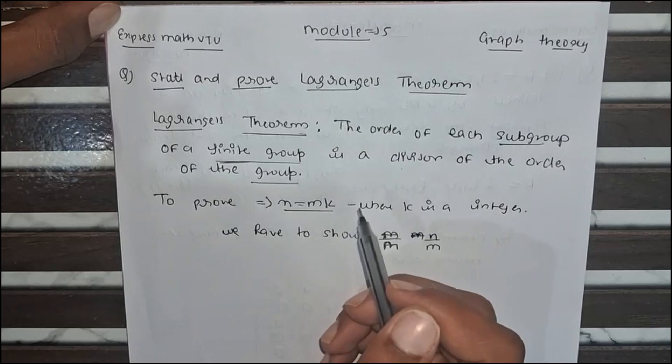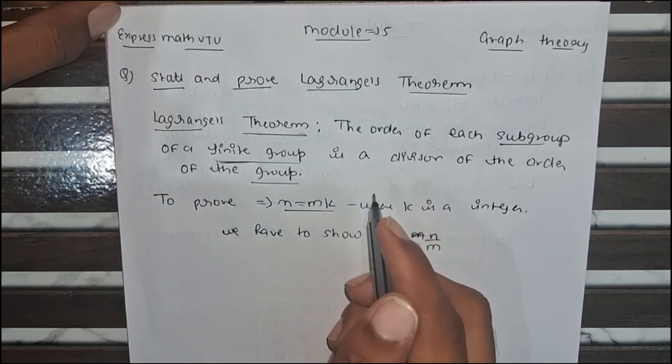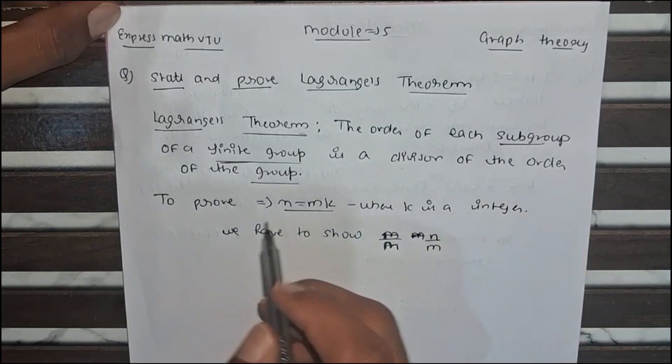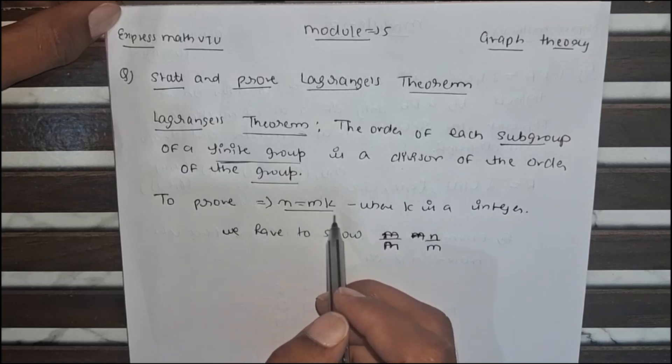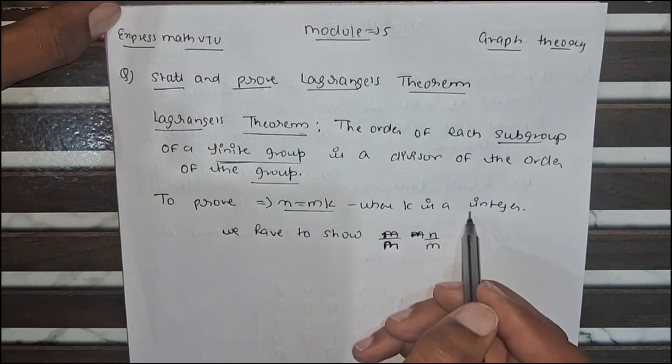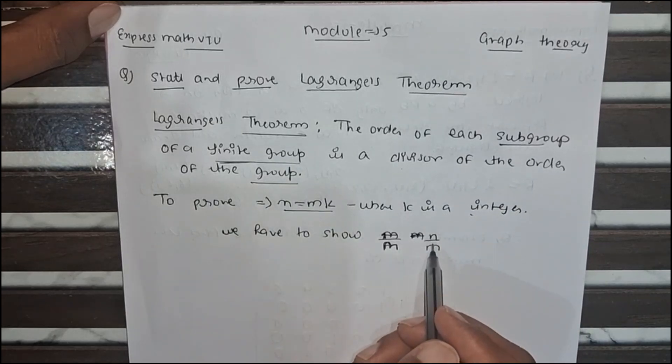What is the order of group? Order of group is how many elements are there in that group. To prove n equals m into k, we have to show n divided by m.